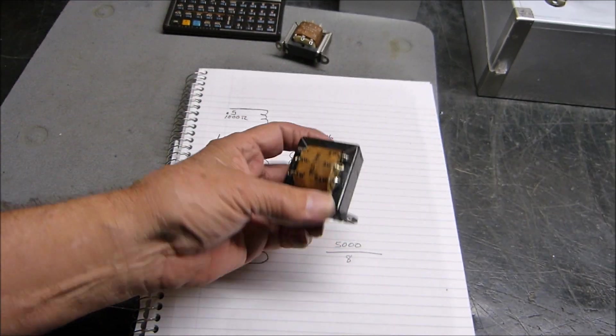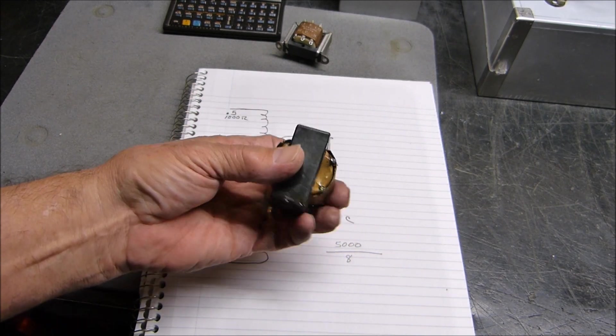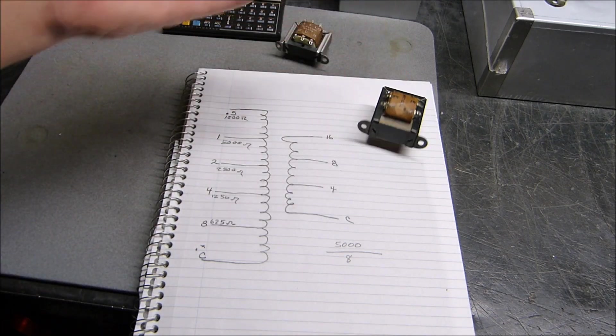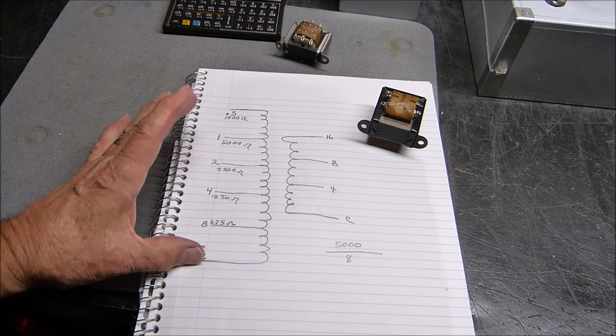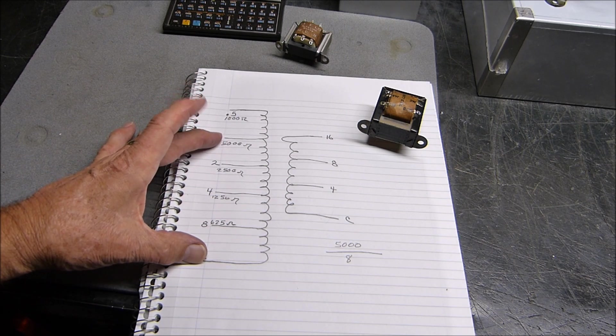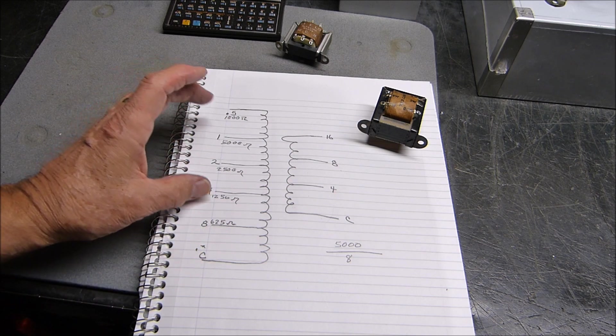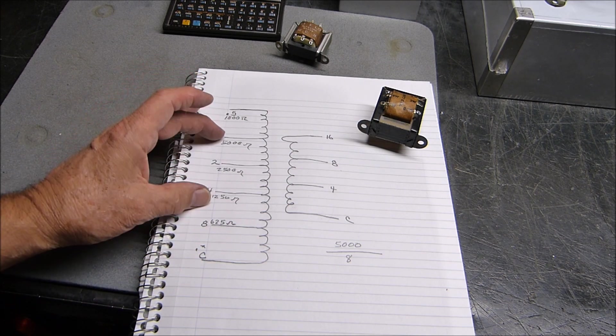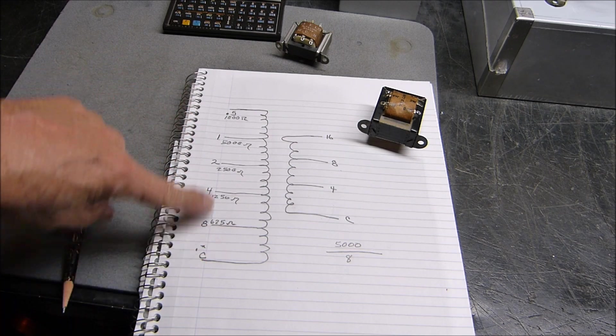What got me started on this is I saw that somebody was advertising on eBay how they measured the inductance. They said the inductance was equal, like for example between the 5,000, the center tap would be the 1,250. So the inductance between C and four and four and one would be the same, and indeed it is.